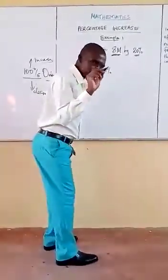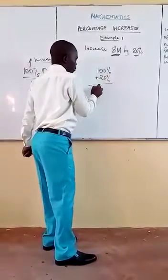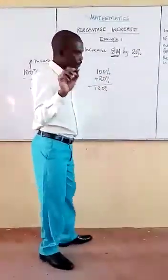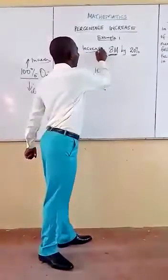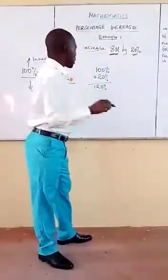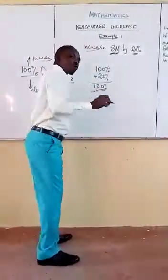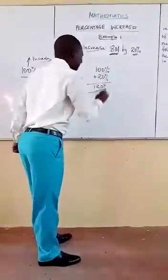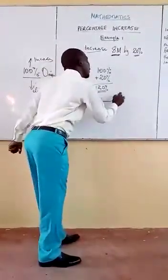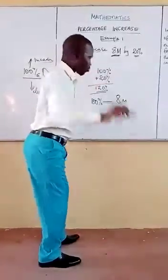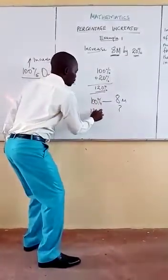We want to increase it by 20%, so we add to get 120%. I want you to follow this: the original value is 100%, then we are increasing by 20%, so when we increase, the new value is 120%. Now you form a statement. The original value of 100% is, in terms of meters, 8 meters. What about the increased value? When increasing 100 by 20 becomes 120%.